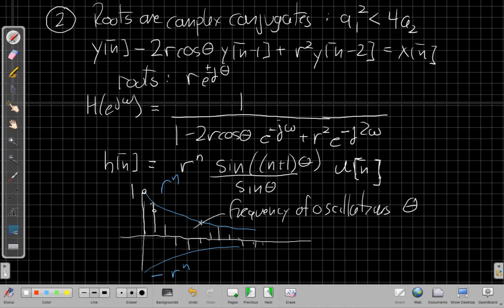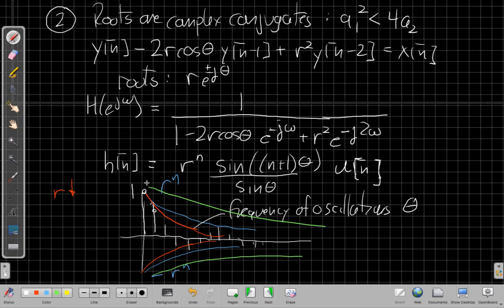The r to the n determines the envelope of how fast those oscillations are dying down. So if I make r smaller, these things would die down even faster. Right, so it would sort of have the same... If it's got the same theta but a smaller r, this thing would die down even faster. If I made r bigger, it would take longer to die out. Right, so I'd have the same frequency of what's going on in between, but the envelope would be slower to squeeze down.